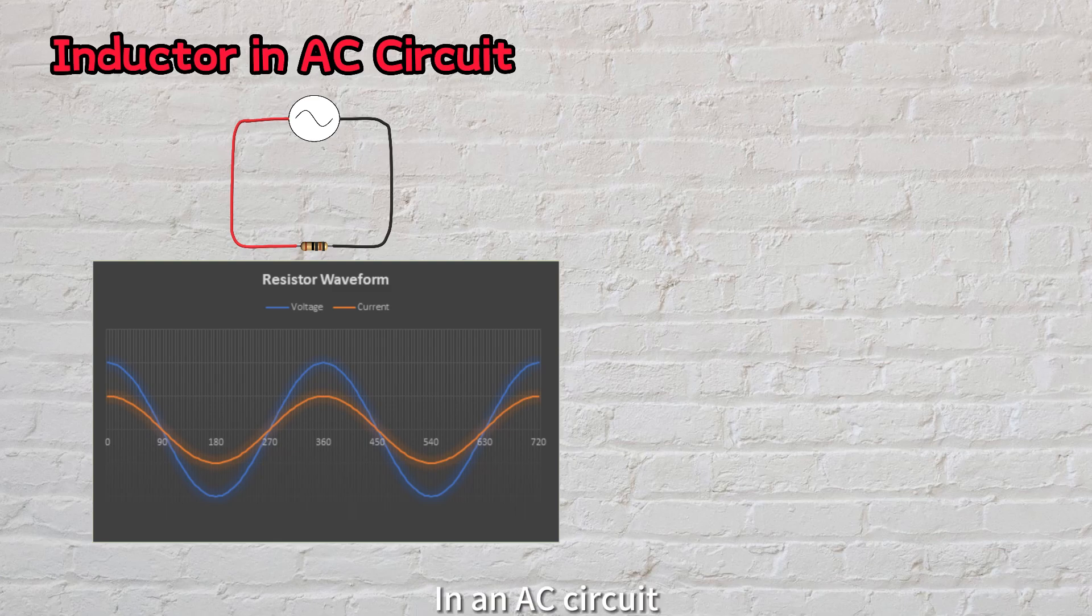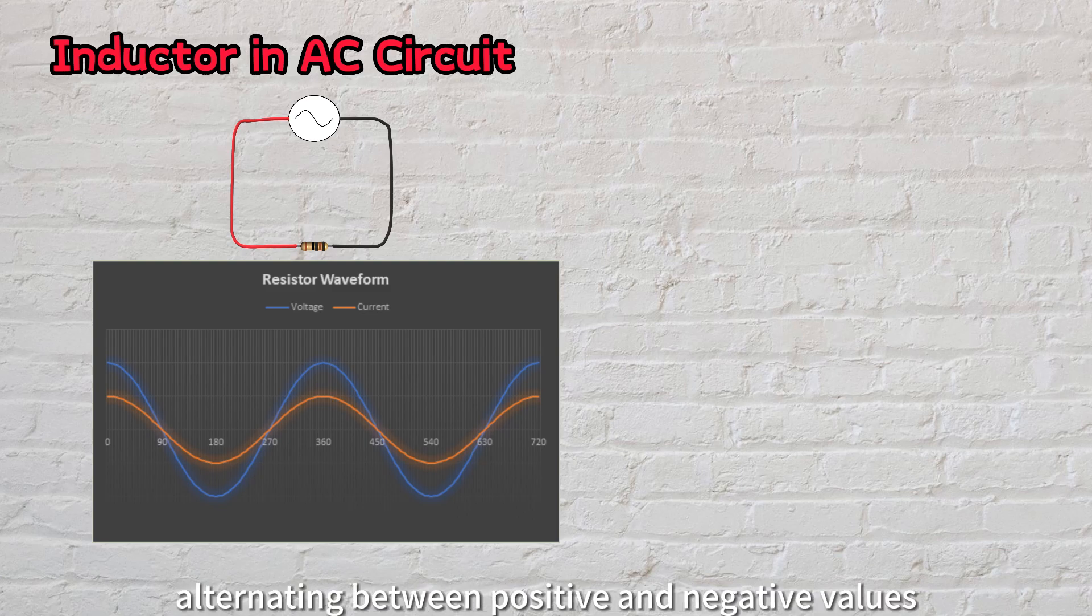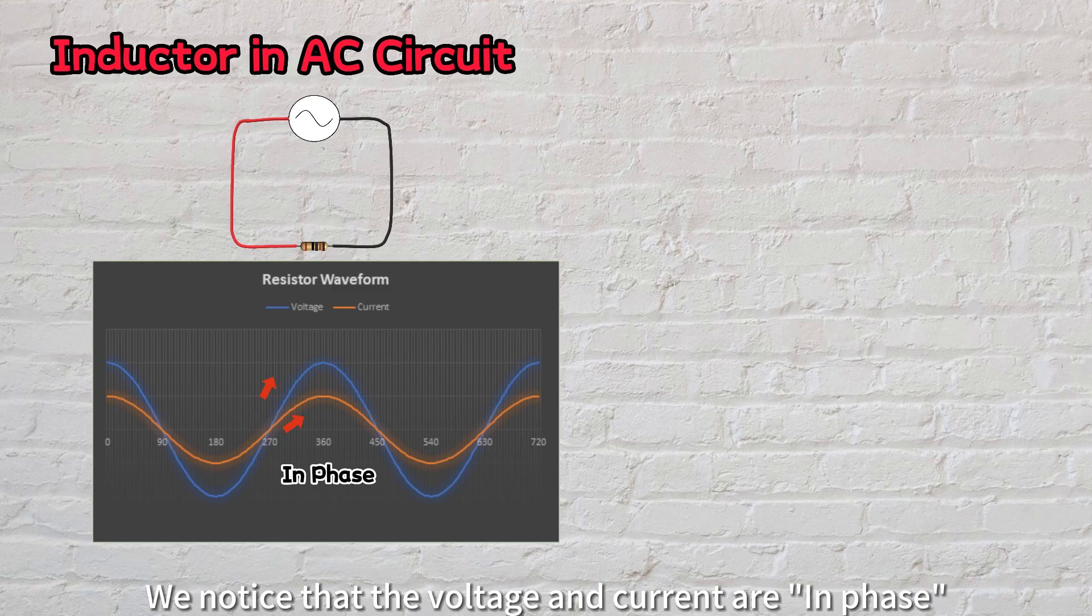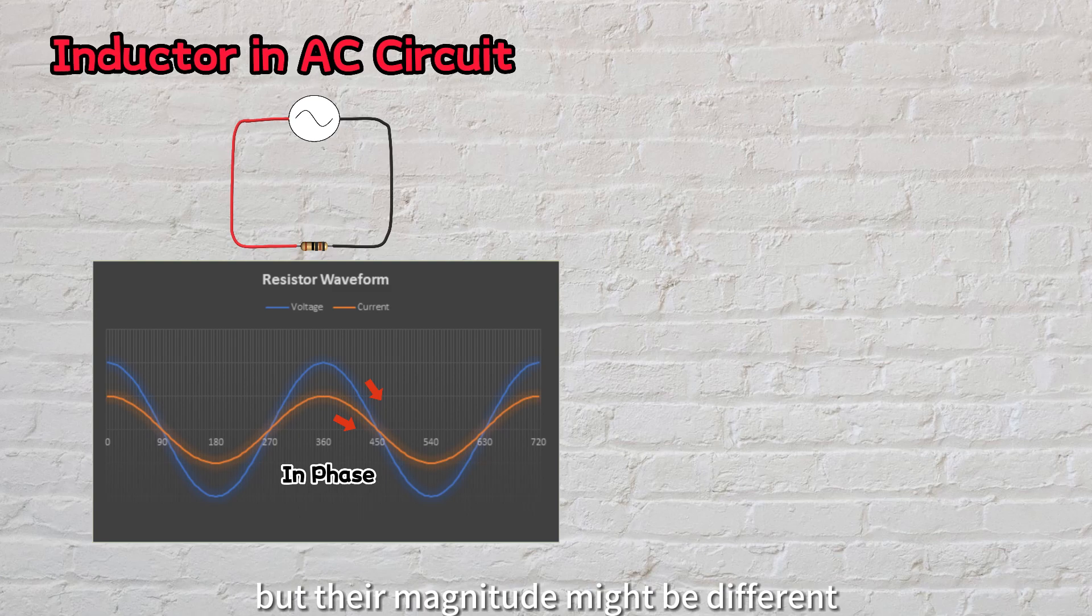In an AC circuit, the voltage and current undergo periodic changes in magnitude and direction, alternating between positive and negative values. We notice that the voltage and current are in phase, meaning they change simultaneously, but their magnitude might be different.